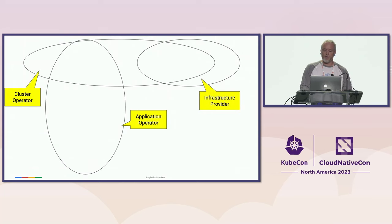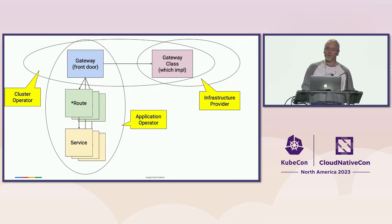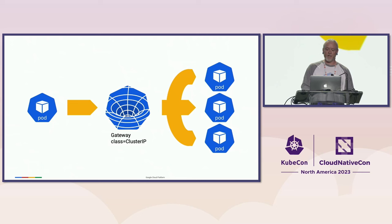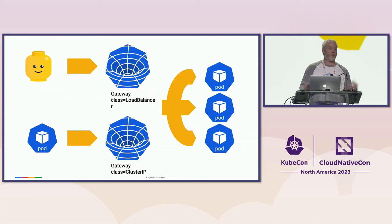Let's take a quick look at the Gateway API model. There are three categories of API resource for up to three different personas: the infrastructure provider, the cluster operator, and the application operator. Somebody defines a gateway, which requests an ingress point to be created. The gateway references the gateway class — this is implementation details. The app operator specifies some routes, which control how traffic is processed, and routes that traffic to services. A cluster IP is really just a gateway into a set of pods — traffic goes from the client into the gateway. A load balancer is also a gateway into a set of pods. Not every service wants a load balancer, and not every load balancer service wants a cluster IP — these things are really different. Because Gateway is a pure API, implementations can choose what they need, and users can compose what they really need from different implementations of the same API.